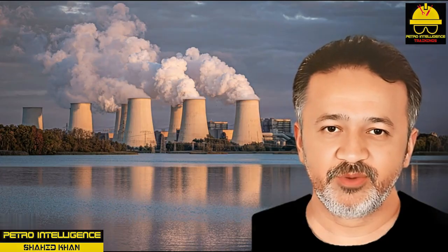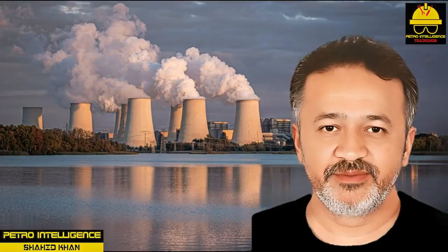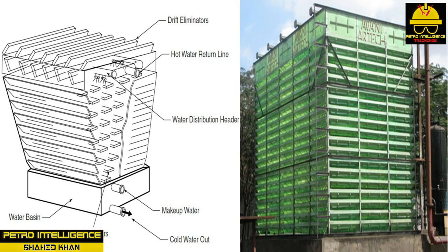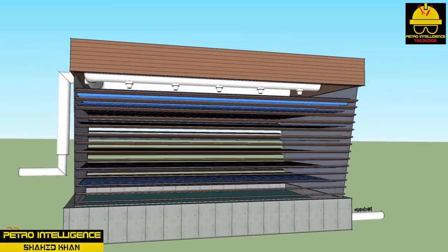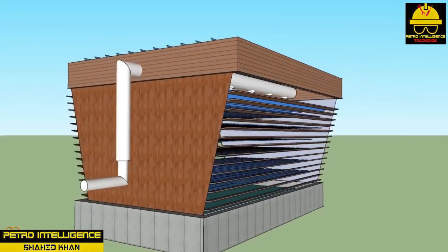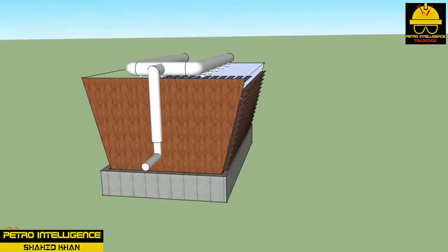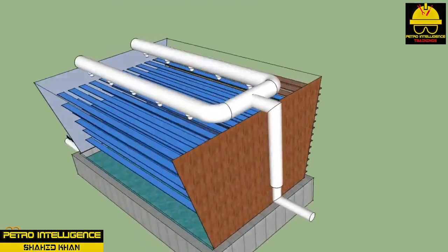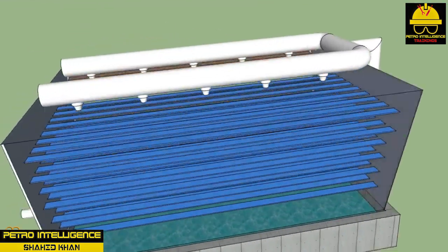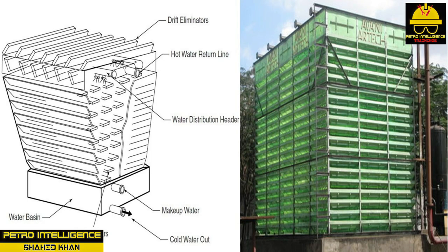Atmospheric cooling tower: in atmospheric towers, wind moves air into and out of the tower, and airflow rates are determined by wind velocity. The tower is designed so that winds blow in horizontally, so the air moves in a crossflow direction.